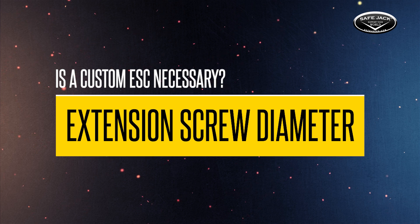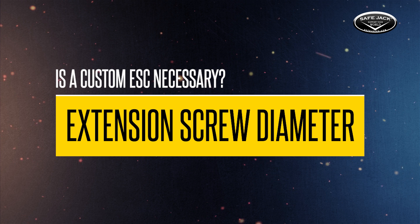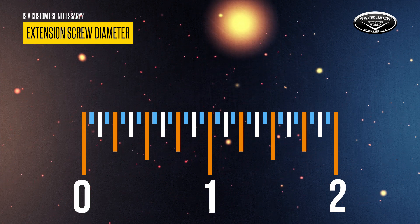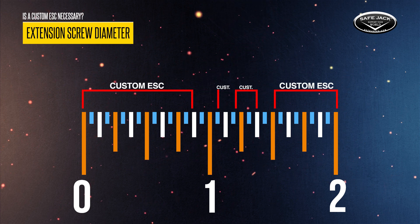First up, the extension screw diameter. If your extension screw diameter falls within a certain range, you may not need a custom ESC at all. This graph shows you the acceptable range for where you can use our pre-made ESCs and where you will need a custom ESC.